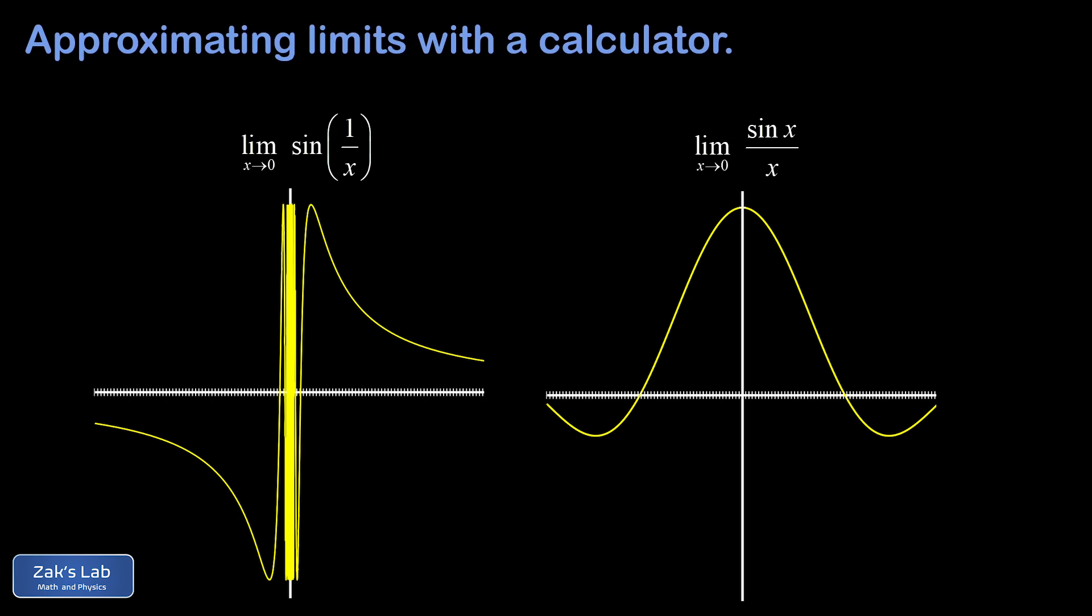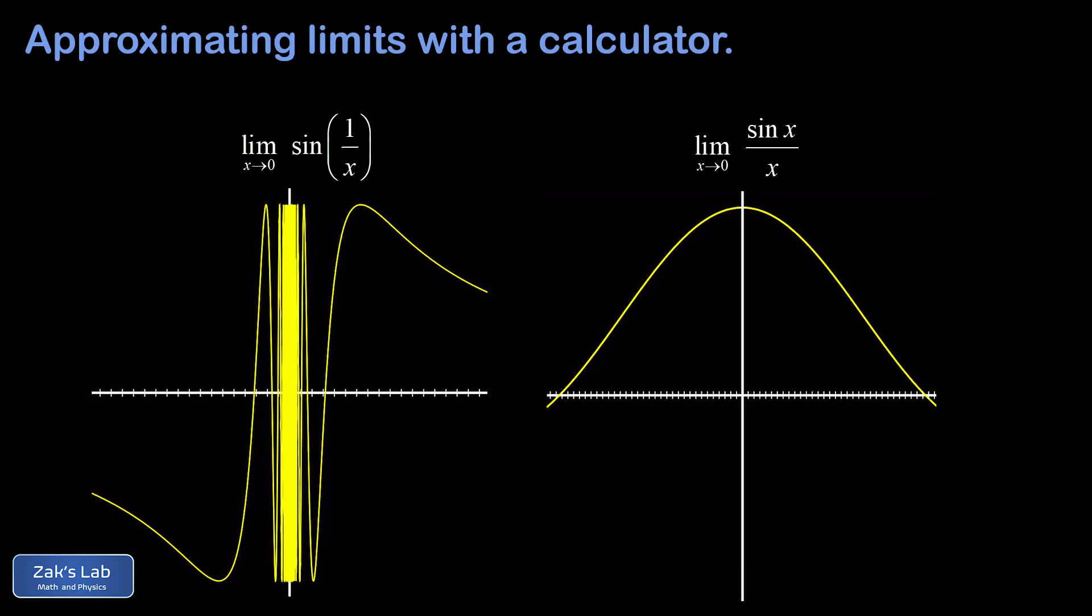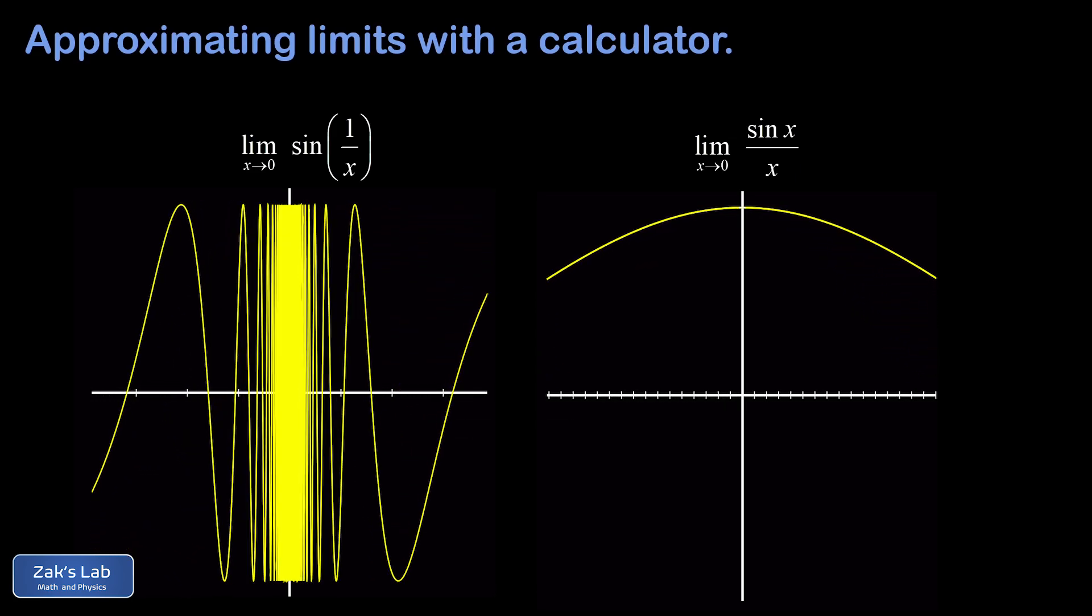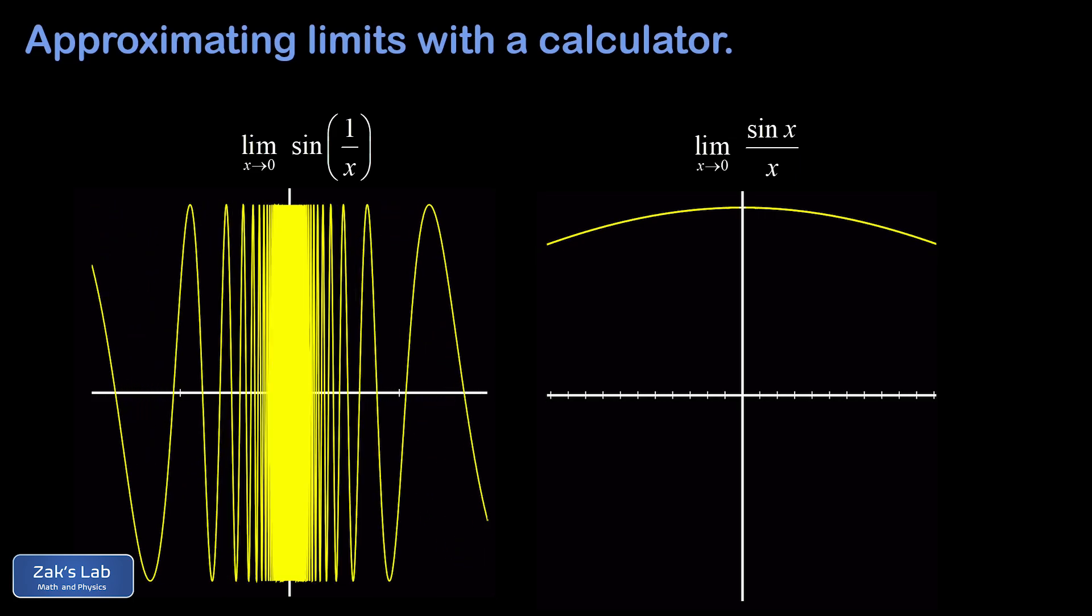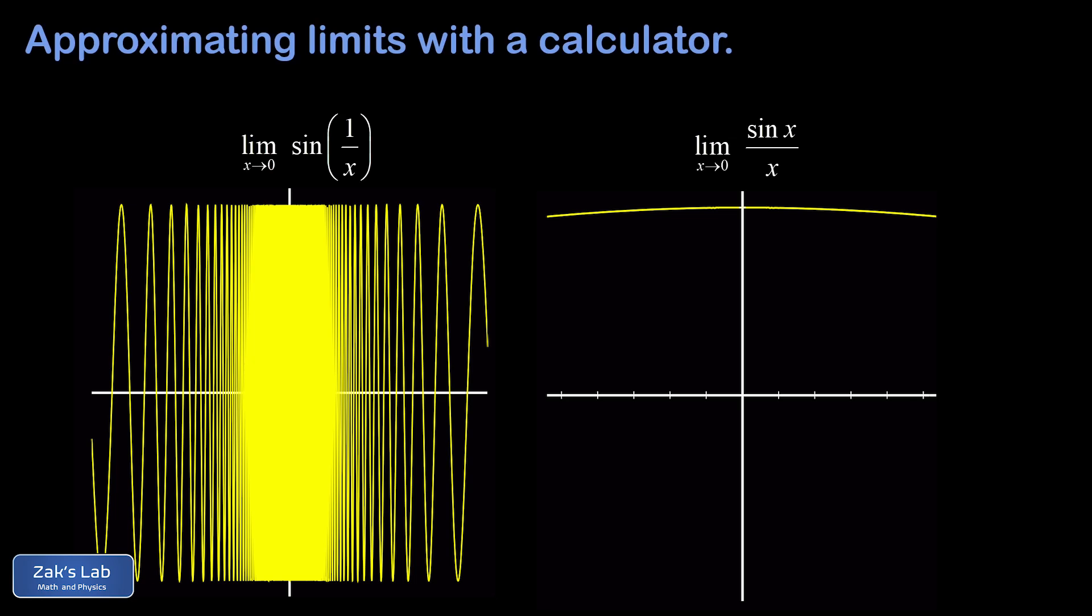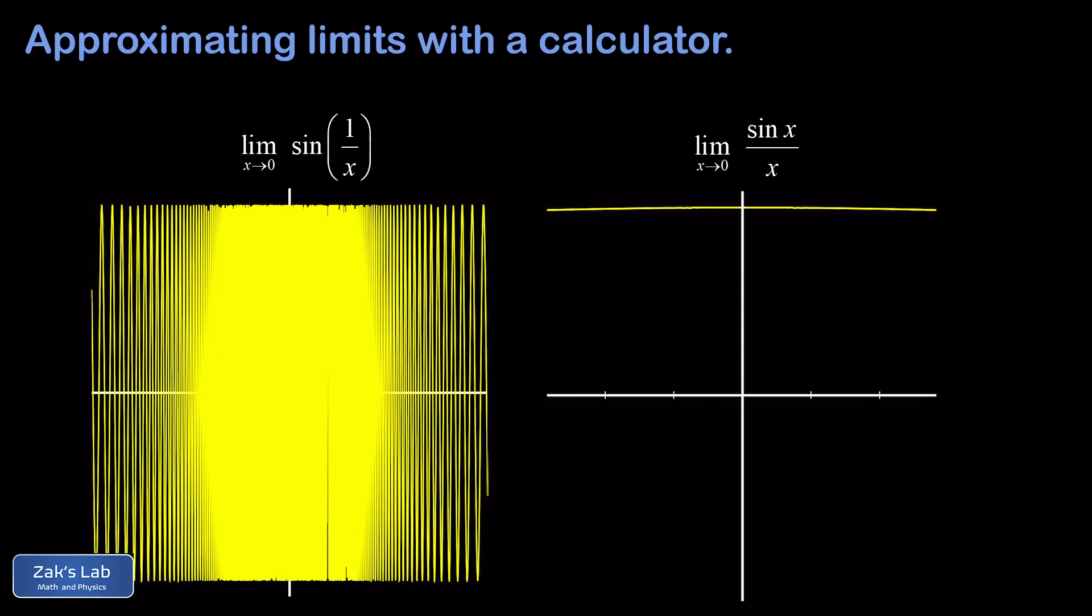So just as a graphical preview of these limits, we're zooming in closer and closer to x equals zero on each of these functions. And we're already getting a sense that sine one over x might be problematic - it looks like the curve just keeps getting denser and denser as we get close to x equals zero. On the other hand, sine of x all divided by x looks like it simply approaches one as x gets close to zero.